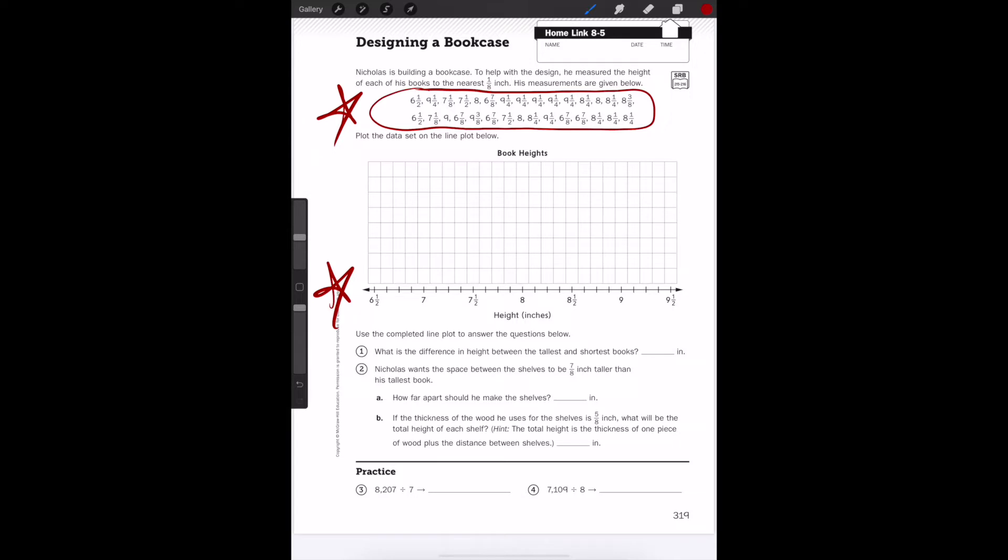In the data, I am noticing that some of the measurements are in terms of halves. Seven and a half. There's another seven and a half. Six and a half. And some of them are in terms of whole numbers. Here's an 8. There's a 9. There's an 8 hiding under there.